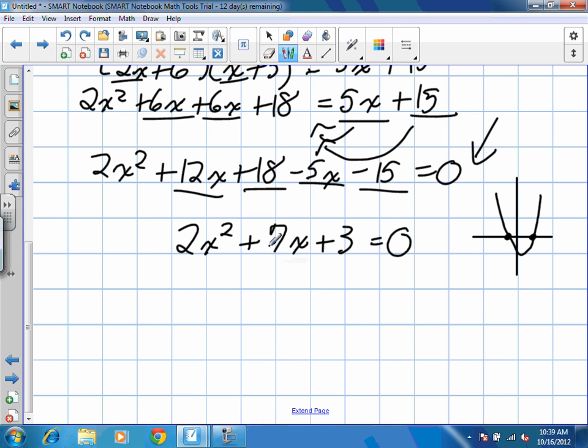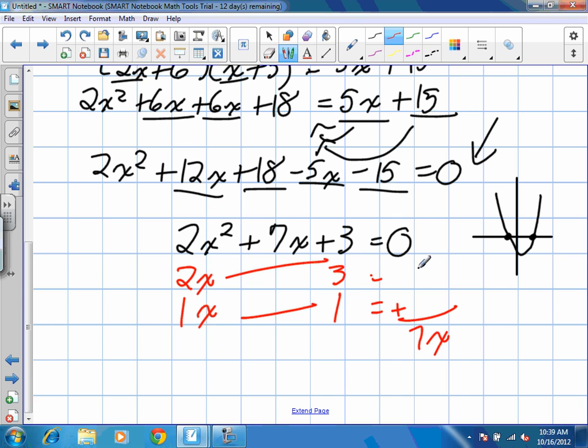We're going to take the factors of the first term. We know they're going to be 2x and x. Factors of the last term are 3 and 1. We know their products need to add up to 7x. So when we multiply, it looks like it's going to be 2x times 3, which will give us 6x, and 1x times 1, which will give us 1x. So those both work. So in our factored form, we're going to have 2x plus 1 and x plus 3 is equal to 0.